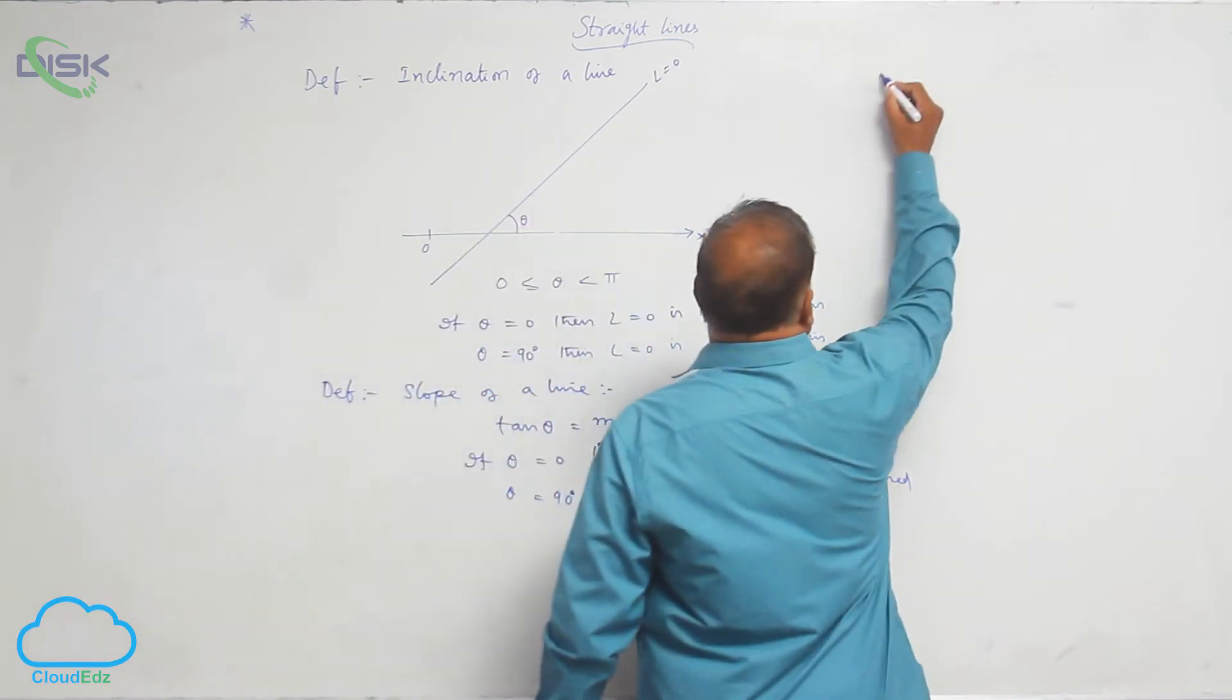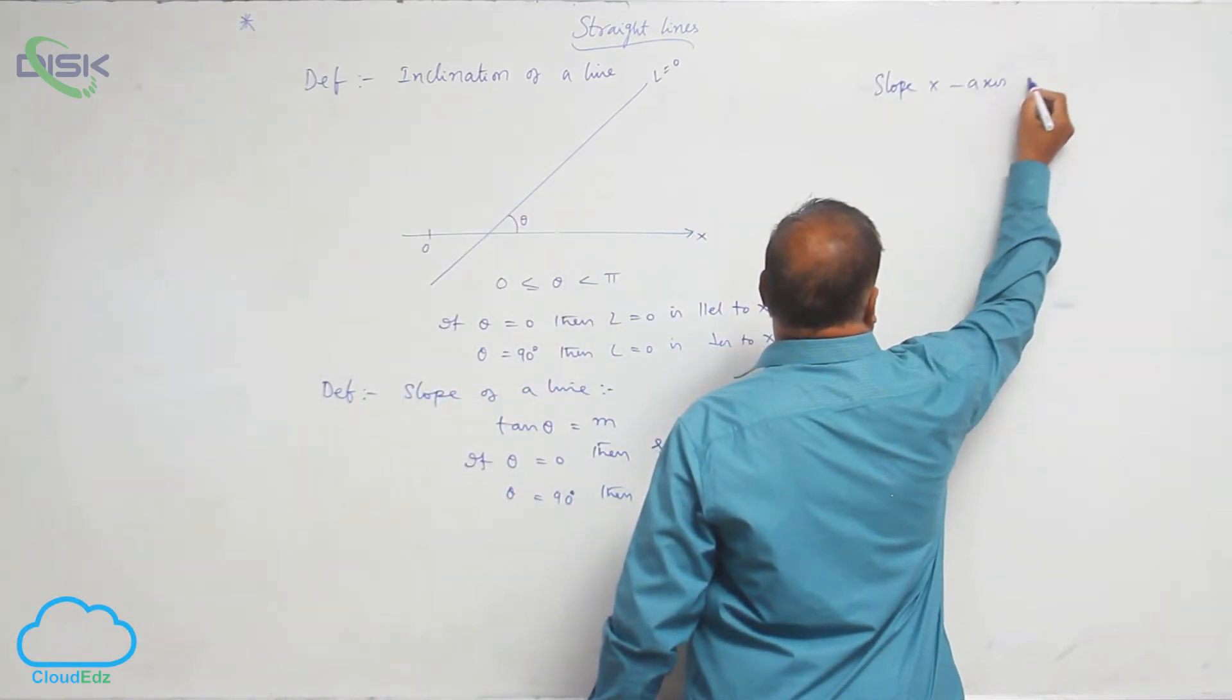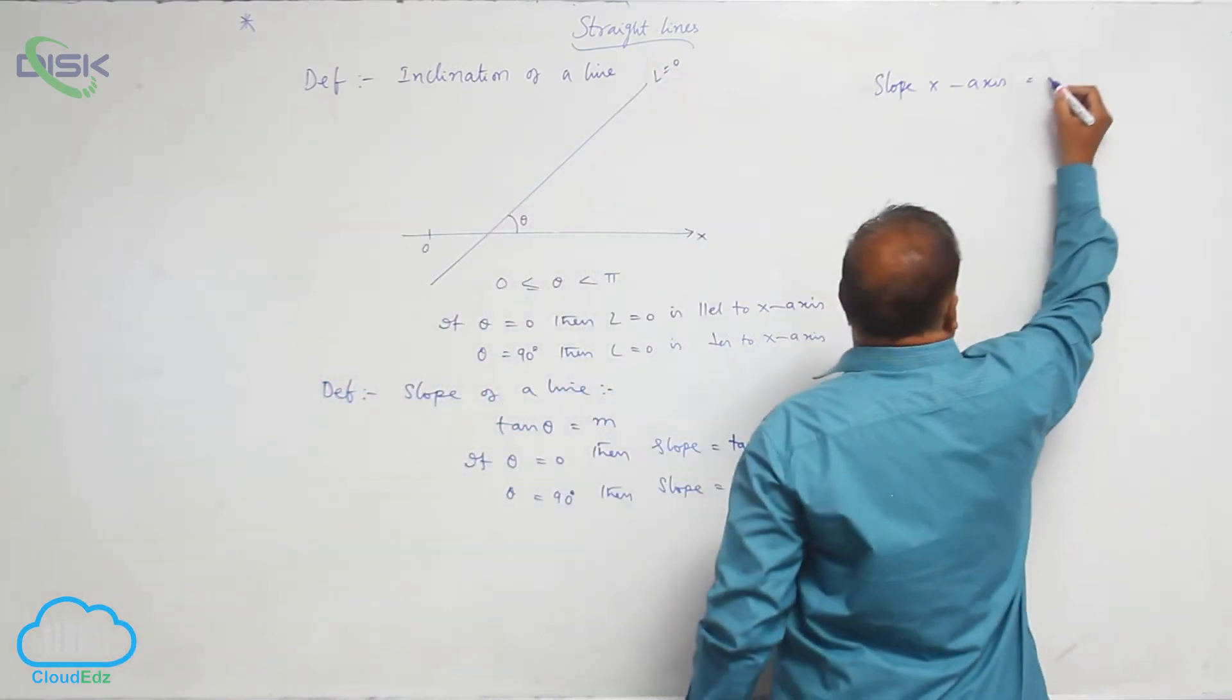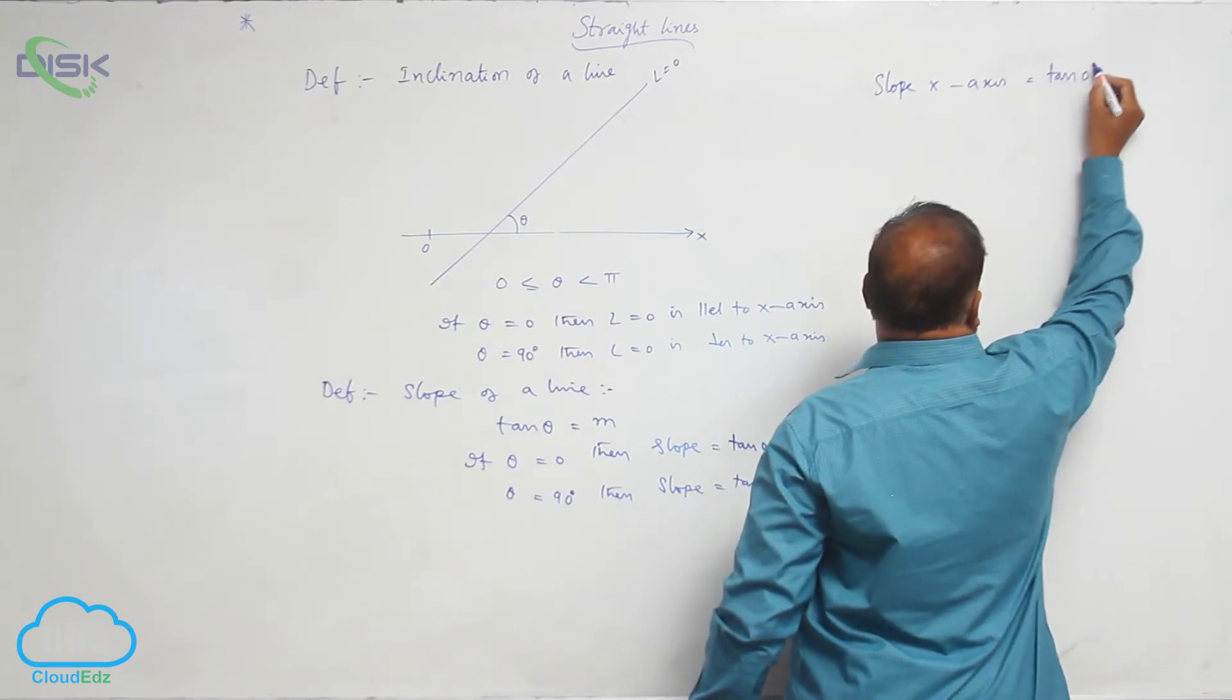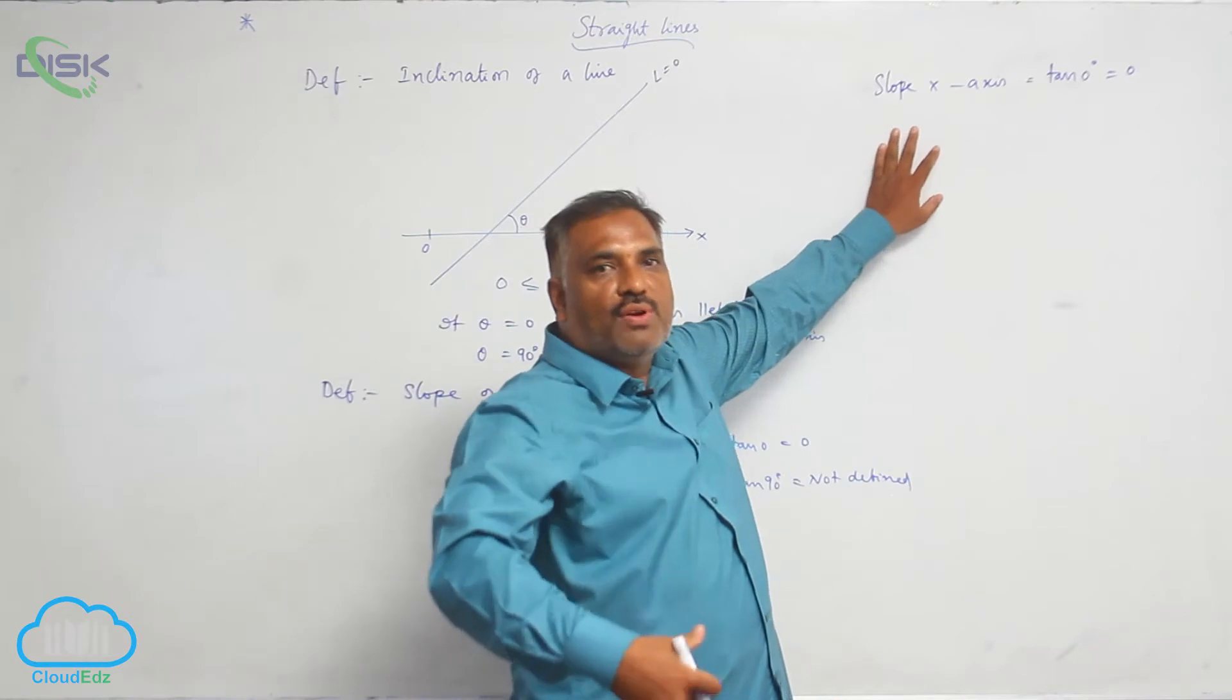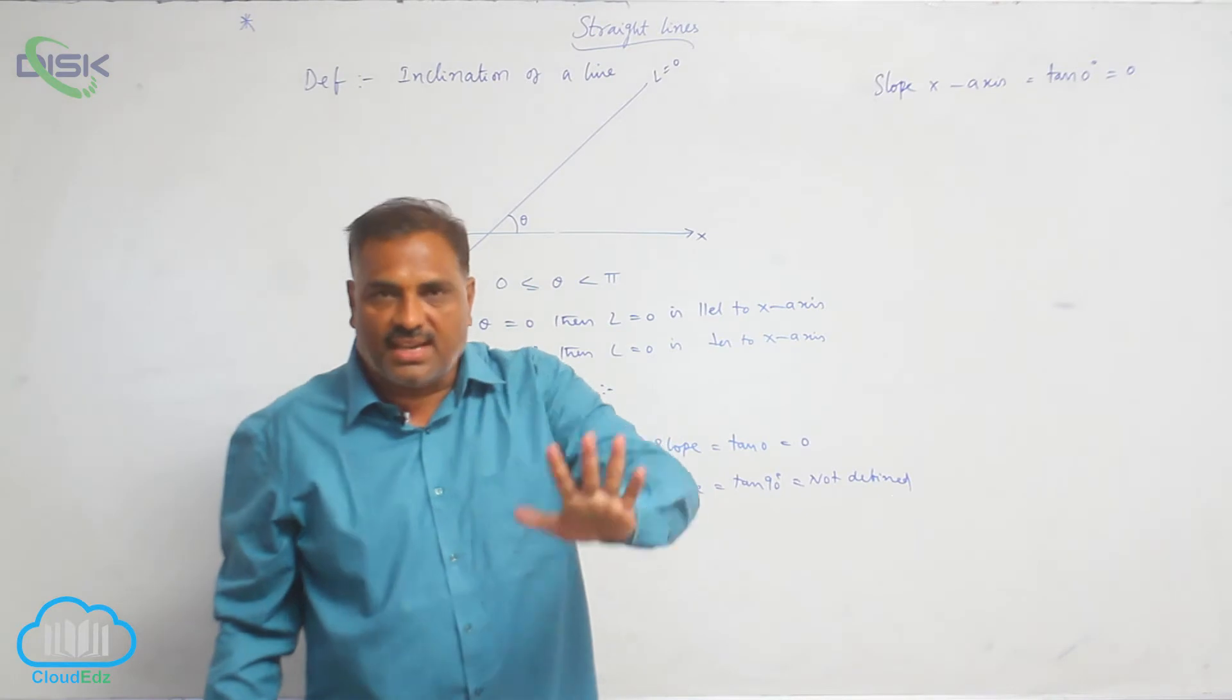Now suppose if you take slope of x-axis. Slope of x-axis means the line is coinciding with x-axis. So automatically slope will become tan 0, that is equal to 0. So here we can conclude one point. Slope of x-axis is 0 means any line parallel to x-axis.